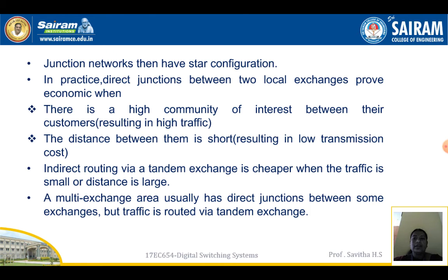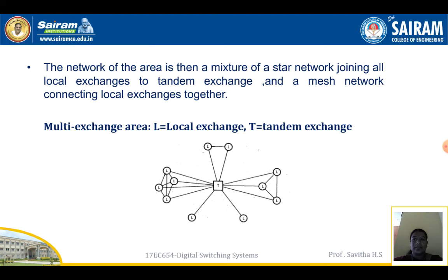Indirect routing via a tandem exchange is cheaper when traffic is small or the distance is large. A multi-exchange area usually has direct junctions between some exchanges, but traffic is routed via a tandem exchange. The network of the area is then a mixture of a star network joining all local exchanges to the tandem exchange, and a mesh network connecting local exchanges together.